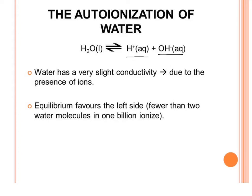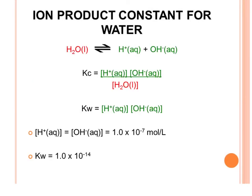However, the equilibrium favors the left side, or the reactants. There are fewer than two water molecules in one billion that actually ionize, so it doesn't happen very often, but it does happen a little bit.